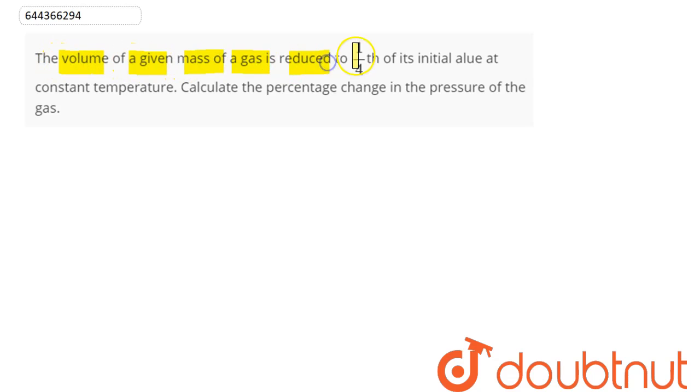mass of a gas is reduced to one-fourth of its initial value at constant temperature. Calculate the percentage change in the pressure of the gas.